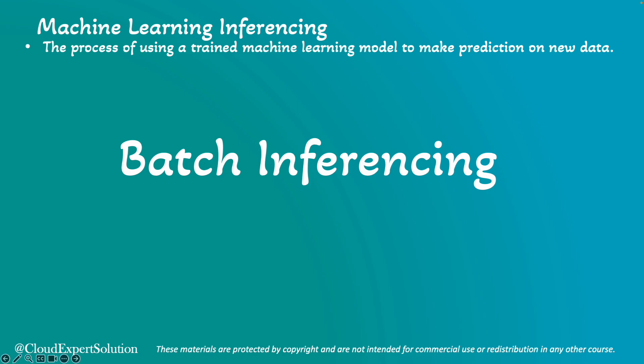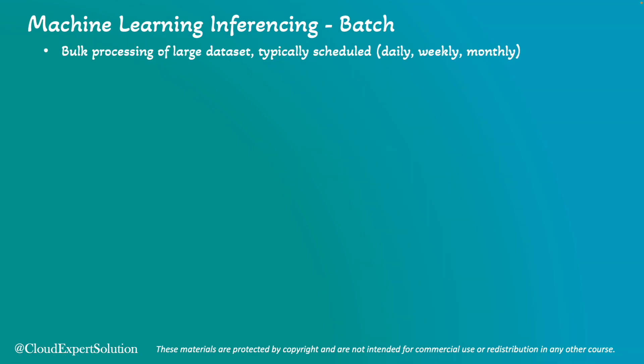We will start with Batch Inferencing. In batch mode, we process bulk or large amounts of data, and typically the machine learning algorithm runs on a schedule — maybe daily, weekly, or monthly basis. This is also called offline processing or inferencing because we do not get a result instantly.